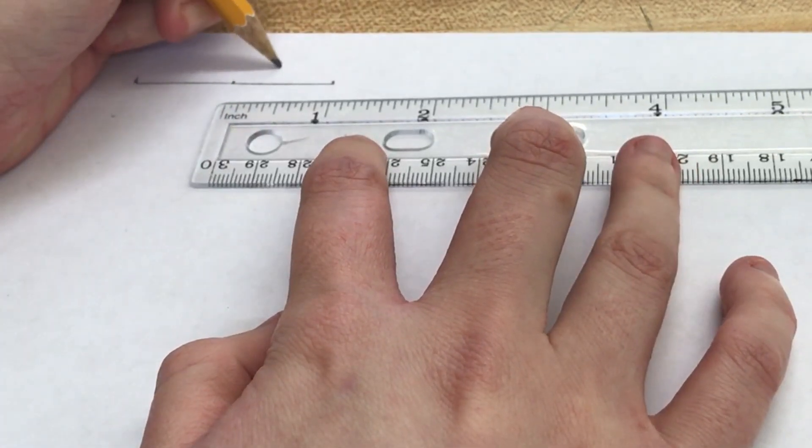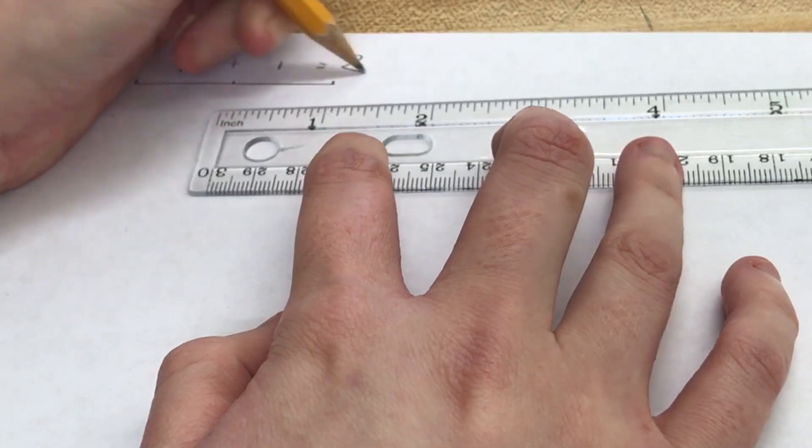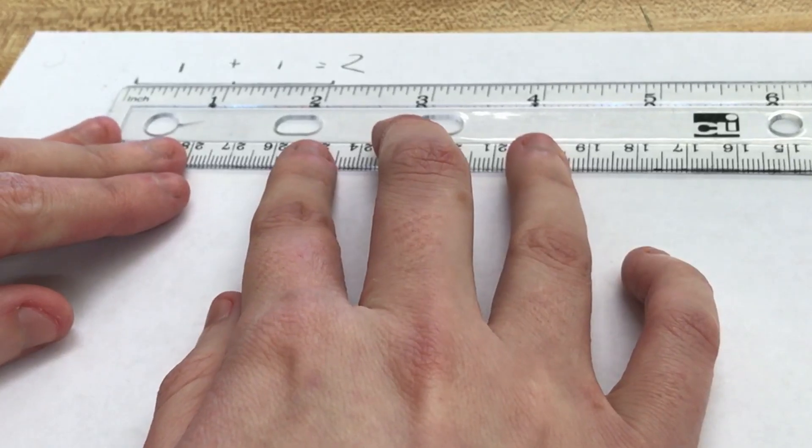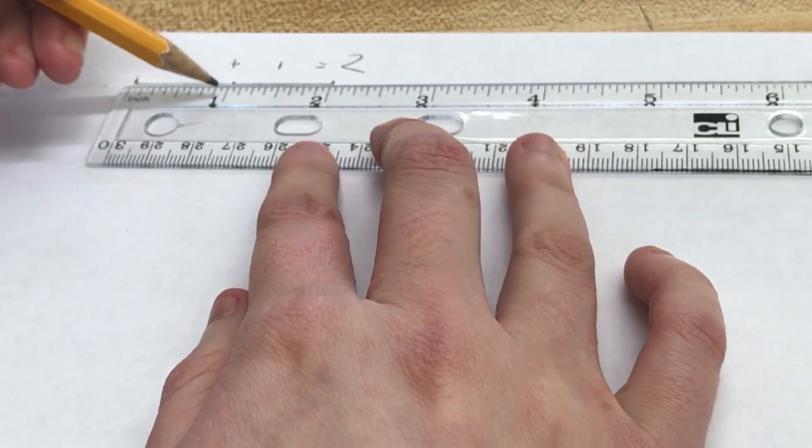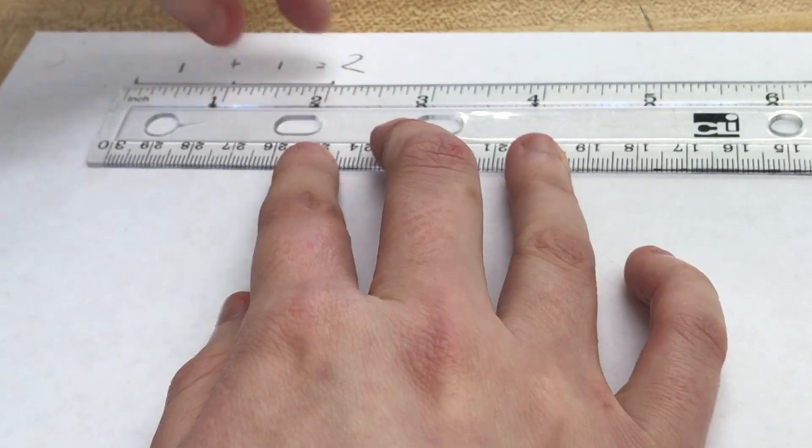So this is an inch, that is an inch. One plus one, this whole thing is two inches. So whenever you skip that zero to one, you're skipping an entire inch.